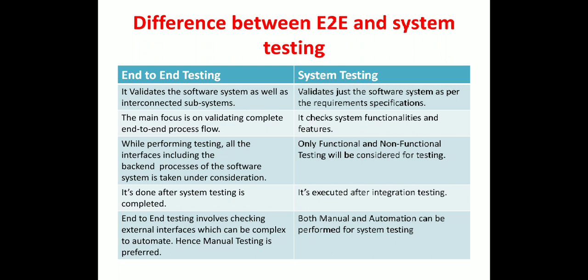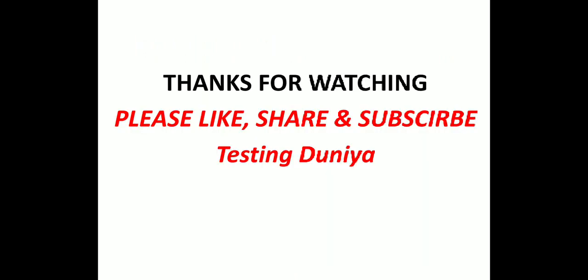Automation can be performed for system testing — functional testing, load testing, and performance testing can all be automated for system testing. So in system testing, automation is feasible. But in end-to-end testing, automation is feasible but it is complex — complexity makes it less practical. However, it can be performed based on client requirements. This concludes the whole video on end-to-end testing.